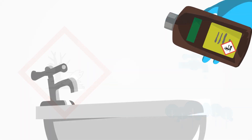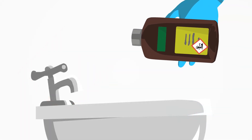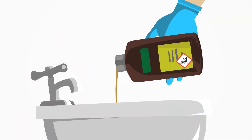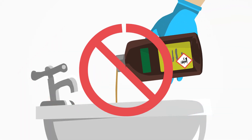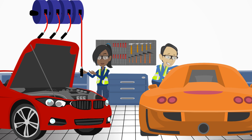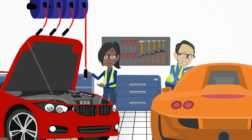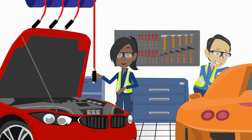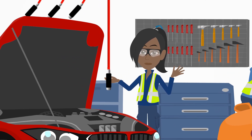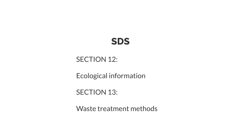The final GHS label signifies an environmental contaminant. The important consideration is never disposing of waste into drains. Refer to supervisory staff for safe disposal procedures. For more information, refer to Sections 12 and 13 of the SDS.